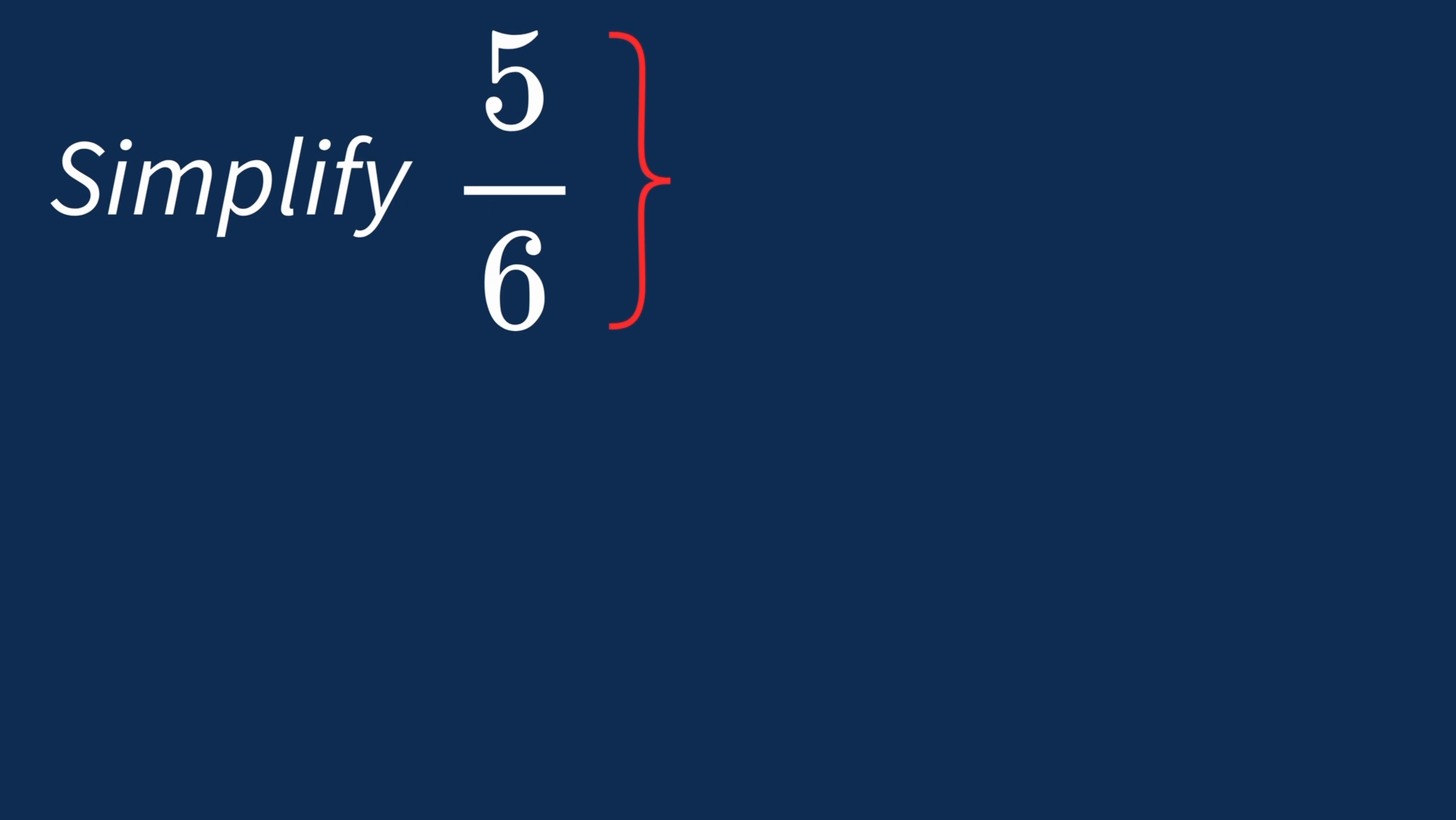To simplify a fraction like 5 over 6, the first step is to check if there's a common factor between the top number, the numerator, and the bottom number, the denominator.